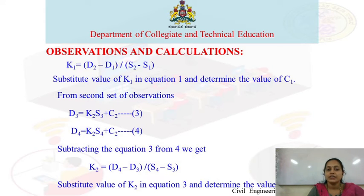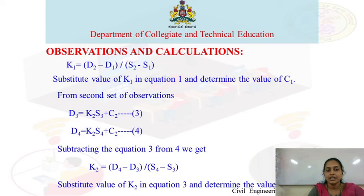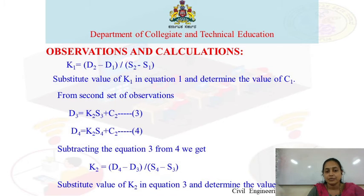Once K1 is found, substitute it into equation 1 to get the value of C1. For the second set of observations, consider D3, D4, S3, S4 values. K2 is equal to (D4 minus D3) divided by (S4 minus S3).